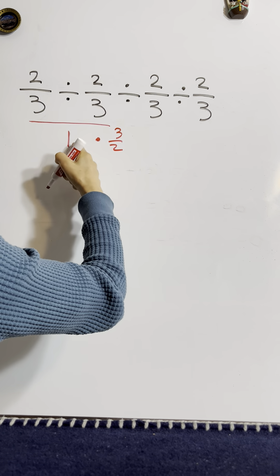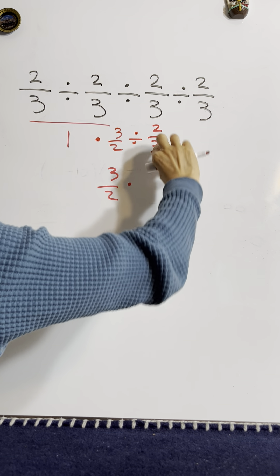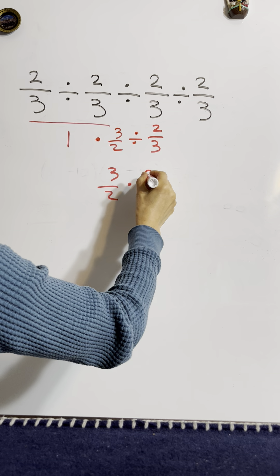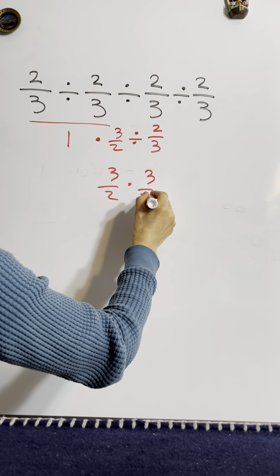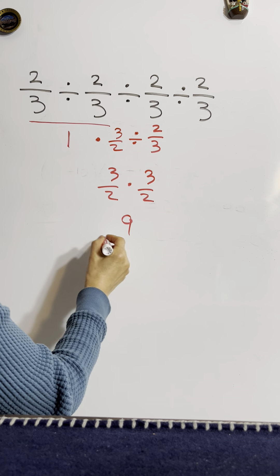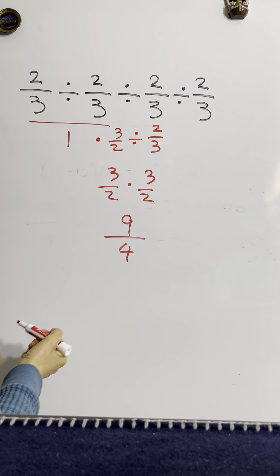So now we have three over two divided by two over three. We again change division into multiplication, taking the multiplicative inverse of two over three, which is three over two. Then we multiply numerator with numerator and denominator with denominator. So the answer is nine over four.